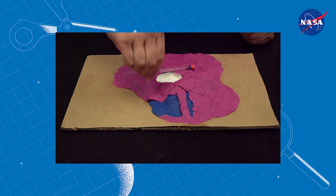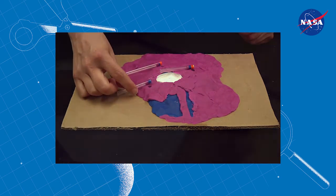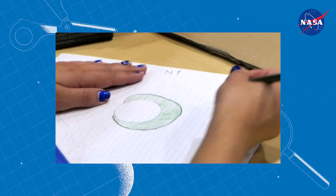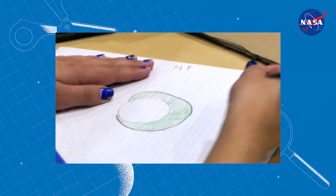From the core samples you collect, see if you can draw where the hidden lava layers are and figure out how big each one is and the order in which they were deposited.